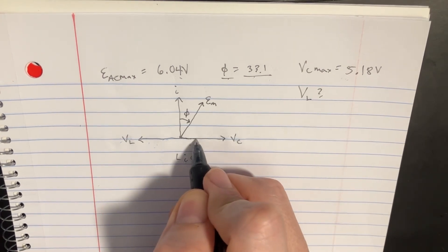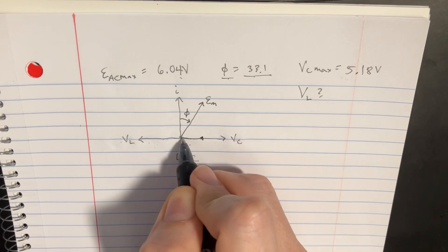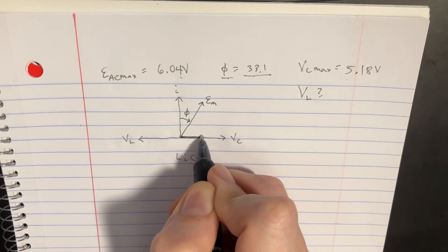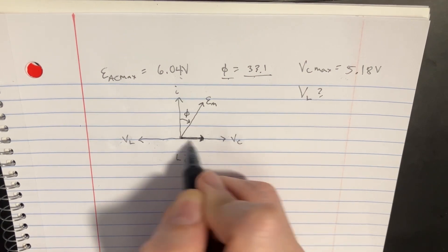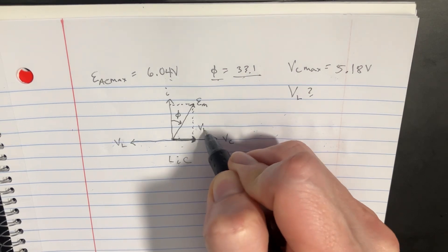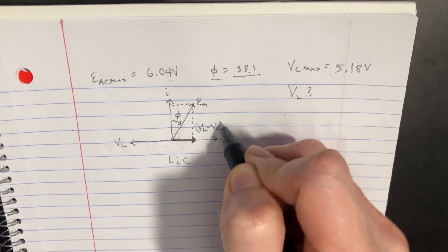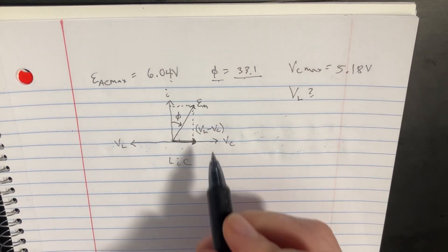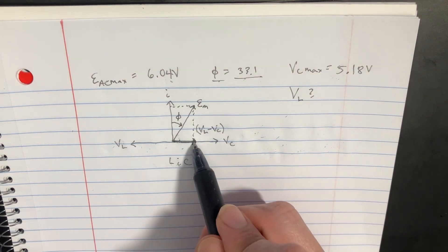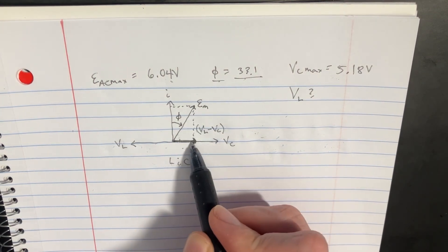One really important thing that we need to figure out is this length. Because this length, when you combine this together... This length right here is called VL minus VC, no matter where you are, left side, right side, or whatever. That is the magnitude of that, at least. And what we need to do is try to figure out what that length is.